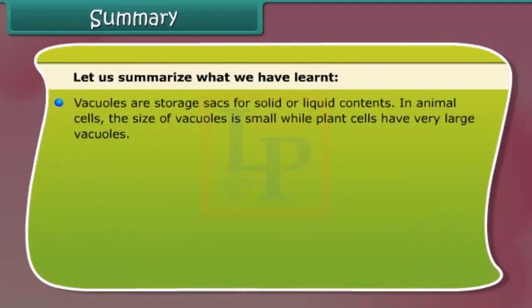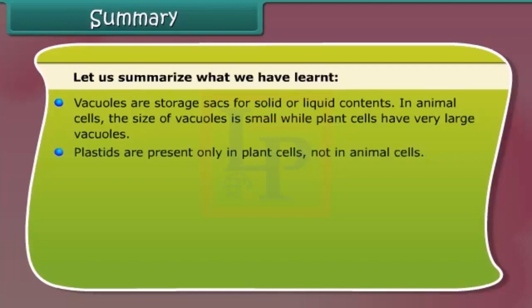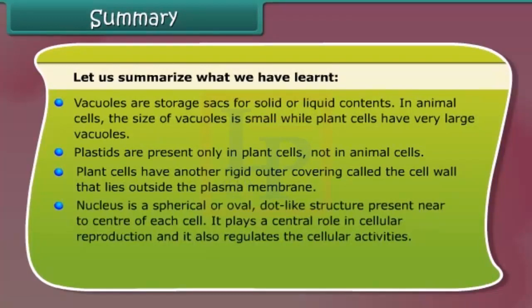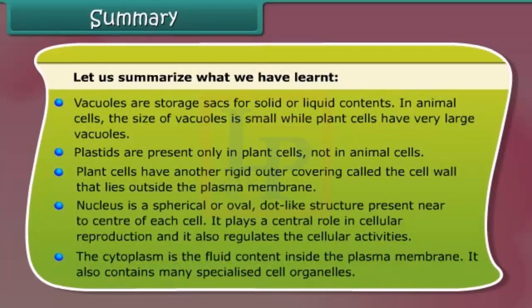Vacuoles are storage sacks for solid or liquid contents; in animal cells the size of vacuoles is small, while plant cells have very large vacuoles. Plastids are present only in plant cells, not in animal cells. Plant cells have another rigid outer covering called the cell wall, which lies outside the plasma membrane and is mainly composed of cellulose, providing strength to the cell. The nucleus plays a central role in cellular reproduction and regulates cellular activities. The cytoplasm is the fluid content inside the plasma membrane and contains many specialized cell organelles.